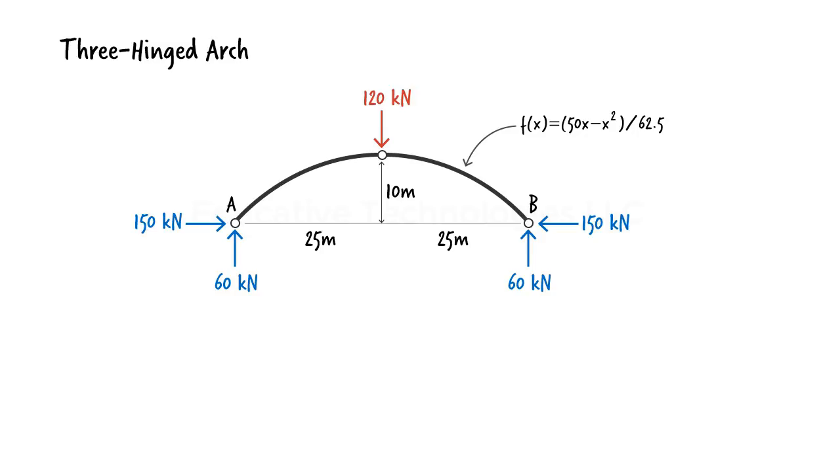Suppose we are asked to determine the internal forces in the arch including axial force, shear force, and bending moment. To do so, we cut the arch at distance x from the origin. The free body diagram of the left segment of the arch looks like this. Note the horizontal and vertical distances from the origin to the cut point. We have labeled the horizontal distance x, so the vertical distance becomes f(x).